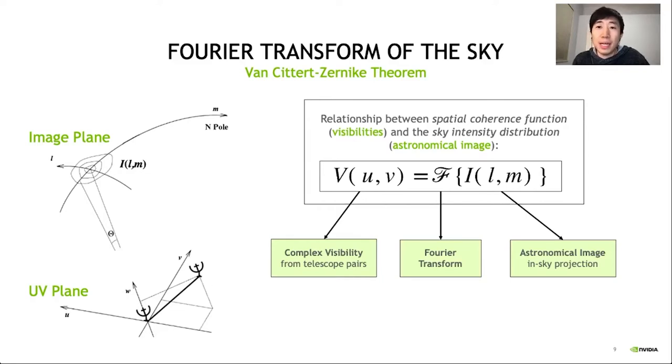In other words, every pair of telescopes gives us a sample of the Fourier domain of the image and we can go to and from these two planes via Fourier transforms.